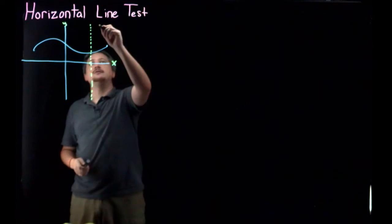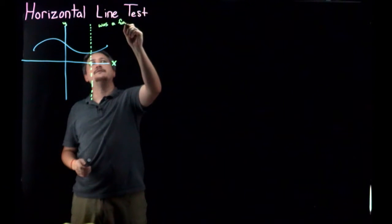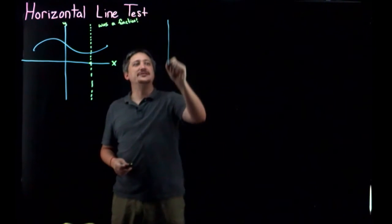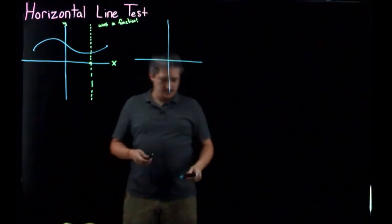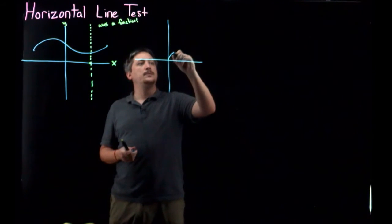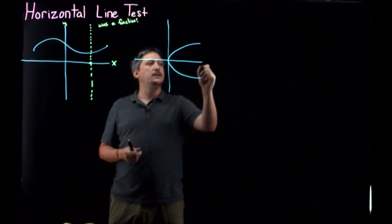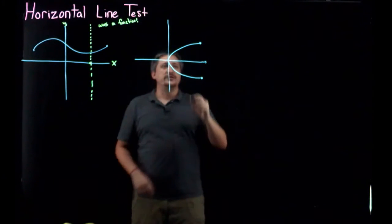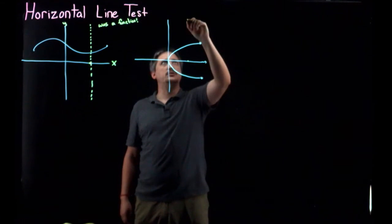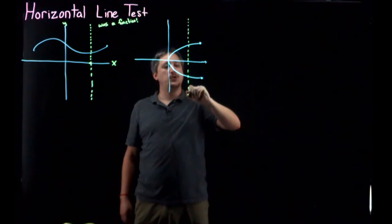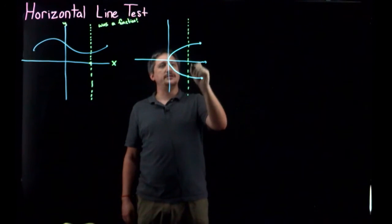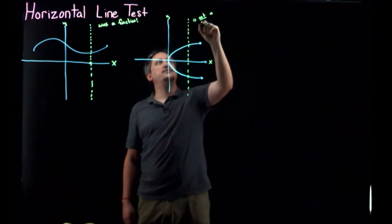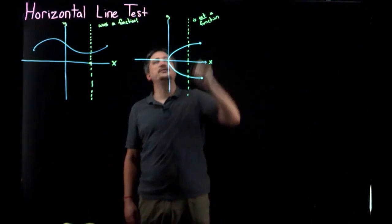So this was a function. This is a function versus when we looked at this one, we picked a certain input, and we looked at the line going through that input. We said, ah, this hit the graph in more than one place. So this x and y, this is not a function. Okay, so this was the vertical line test.